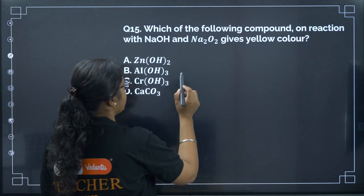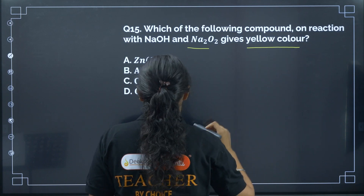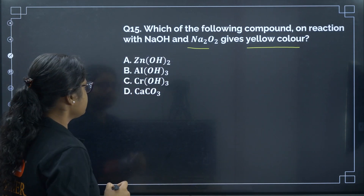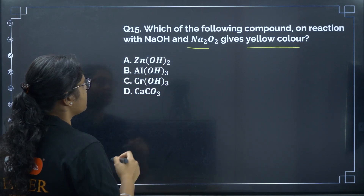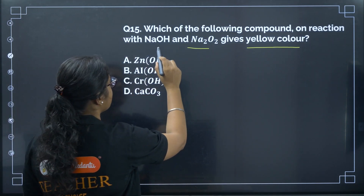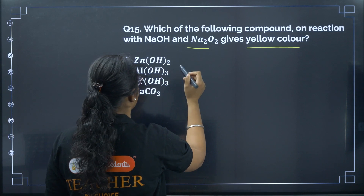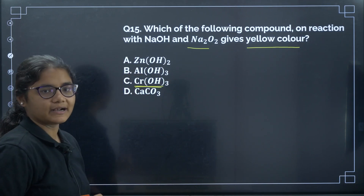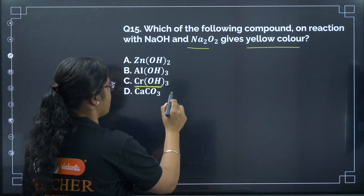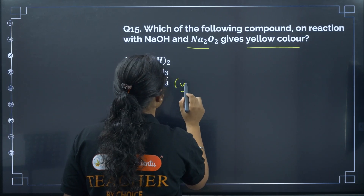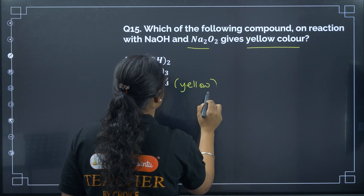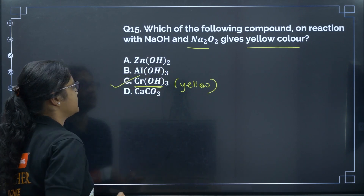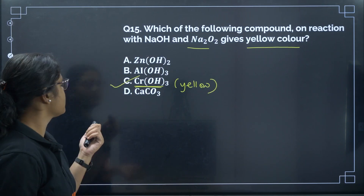Question 15: Which compound on reaction with NaOH and Na₂O₂ gives yellow color? When chromium hydroxide is formed and treated with NaOH and Na₂O₂, a yellow color chromate compound is produced. The correct answer is option C.